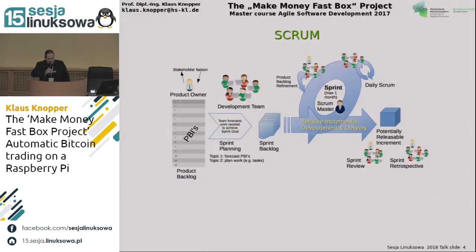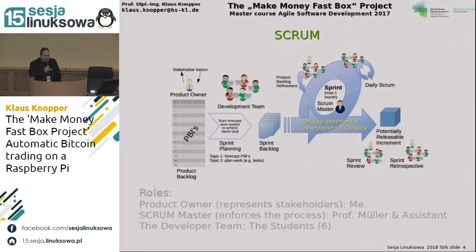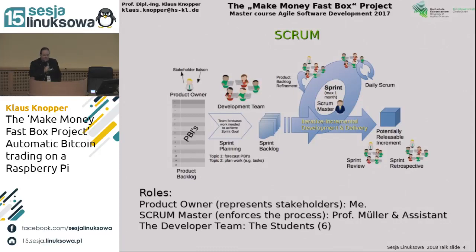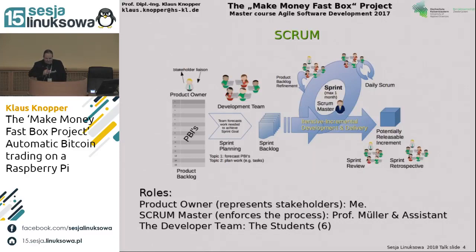The Scrum method we used consists of sprints. During one semester we had sprints of about two to three weeks to complete one task or milestone. We had a trained scrum master — my colleague Professor Müller — and I acted in the role of product owner, meaning I tried not to get too involved in the development. The development team consisted of six students; more in the beginning, but some dropped the course after they learned what it was about.